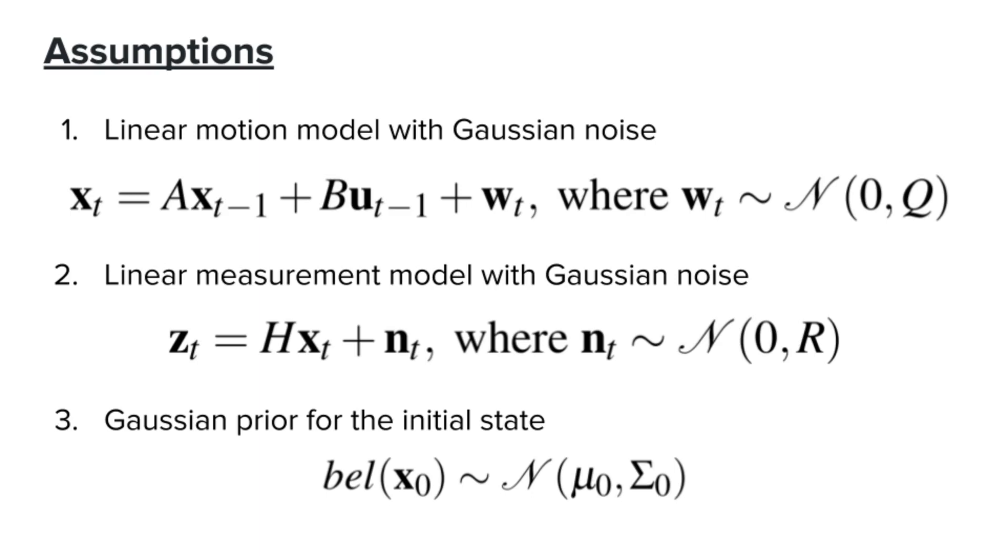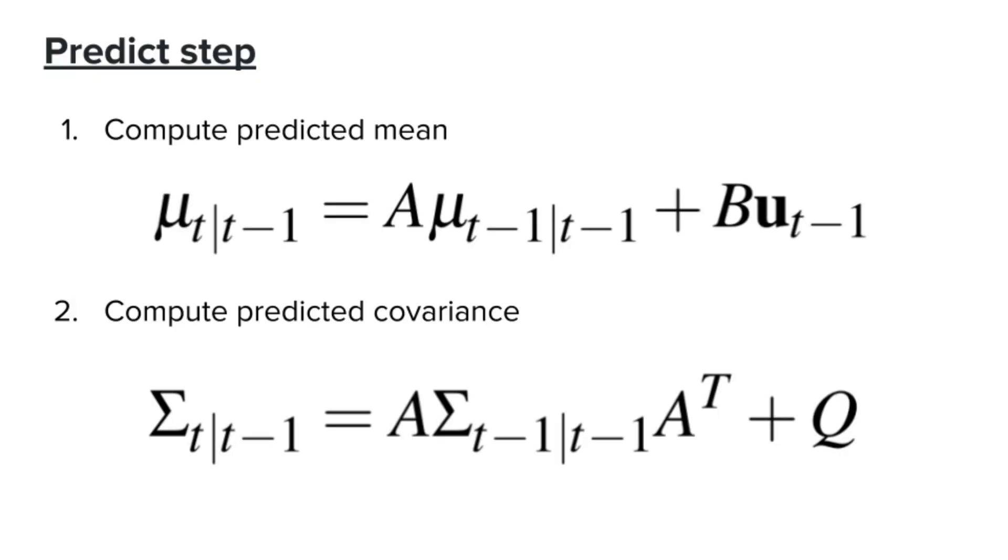Of course, these assumptions sometimes are not realistic, but they allow us to derive the equation for the Kalman Filter. It turns out that even with these assumptions, Kalman Filter is still a powerful technique that we can often rely on in the real world. Okay, so now we're getting into the Kalman Filter equations. There are two main steps that we need to perform. We call these the prediction and update steps. The goal of the prediction step is to predict the state of the robot based on the motion model after we apply a control signal. And this is the equation we need for the prediction step.